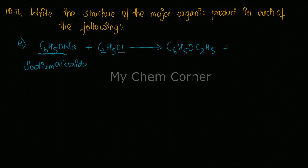Now the remaining part is the positive center of the alkoxide, which is sodium, will form bond with the negative center of the alkyl halide, chloride. So here you're forming your product.